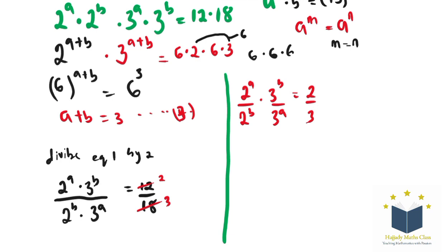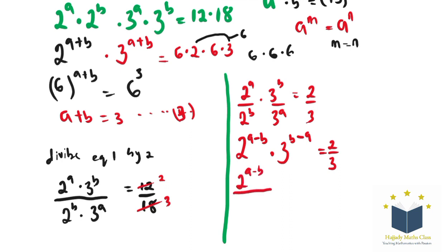So using the rule of indices also for this, I'm going to have 2 to the power of A minus B, multiplied by 3 to the power of B minus A, equals 2 over 3. So with this, I'm going to have 2 to the power of A minus B over 3 to the power of A minus B, because this is the same thing as writing minus A minus B. And this can be in reciprocal form. So we have this equals 2 over 3.